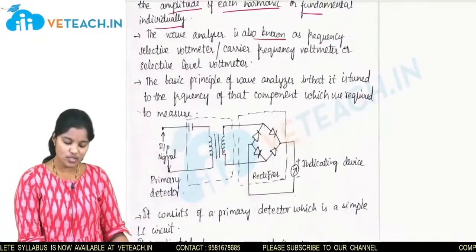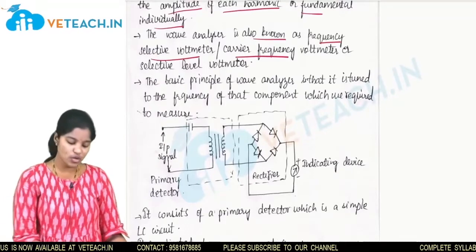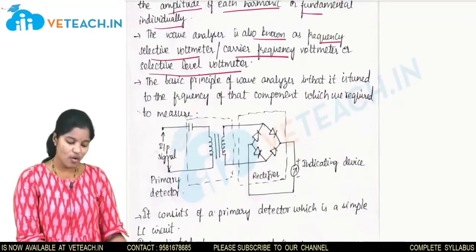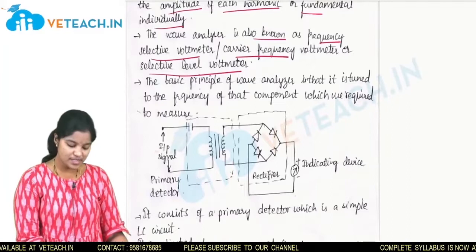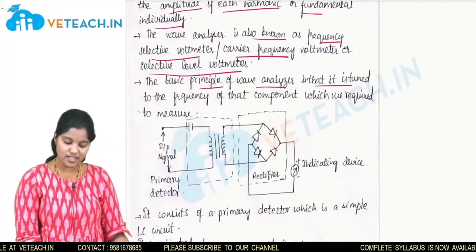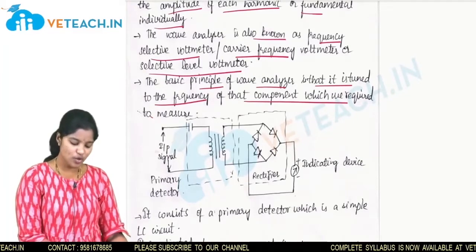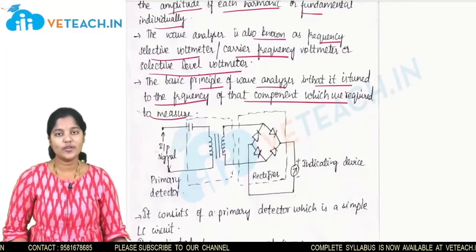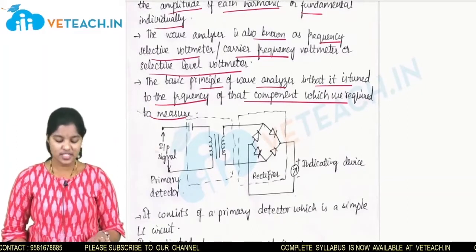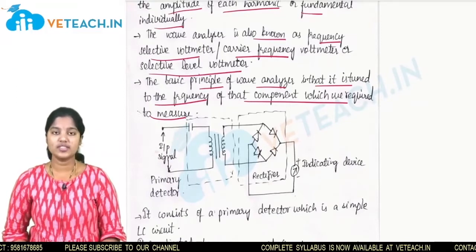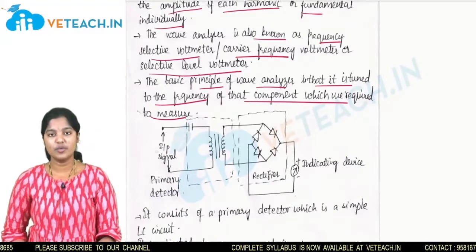A wave analyzer is also known as frequency selective voltmeter, carrier frequency voltmeter, or selective level voltmeter. The basic principle of a wave analyzer is that it is tuned to the frequency of the component which we require to measure — the circuit is tuned to the frequency of the signal to be measured.